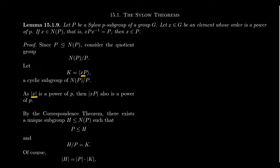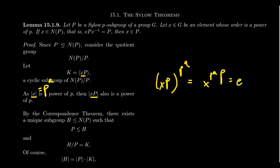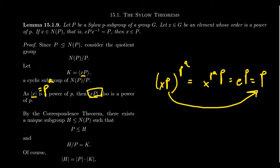Since x has order P^a, we have that (xP)^(P^a) = x^(P^a) · P = P, the identity coset. By Lagrange's theorem, the order of xP must divide P^a. Since only powers of P divide a power of P, the order of xP is also a power of P. So K is a P-group.